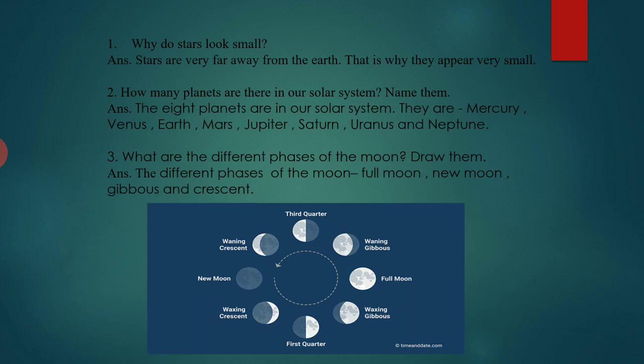Question 2: How many planets are there in our solar system? Name them. There are 8 planets in our solar system. They are Mercury, Venus, Earth, Mars, Jupiter, Saturn, Uranus and Neptune.